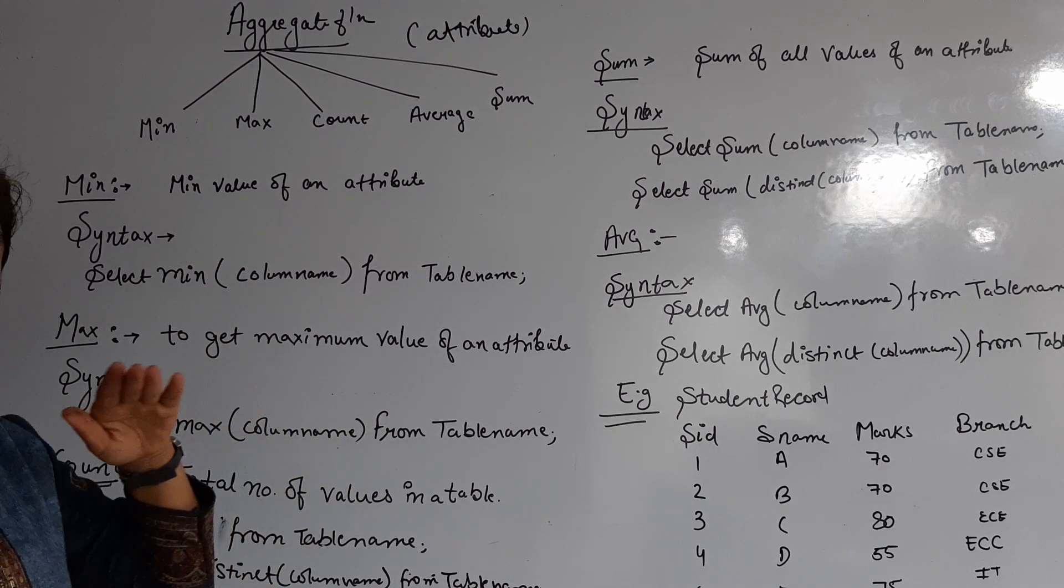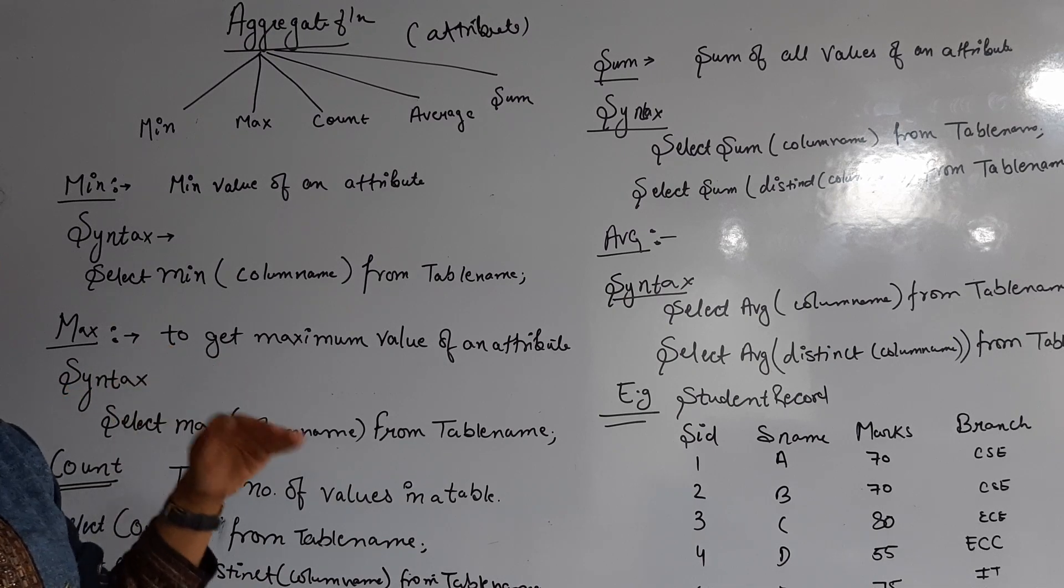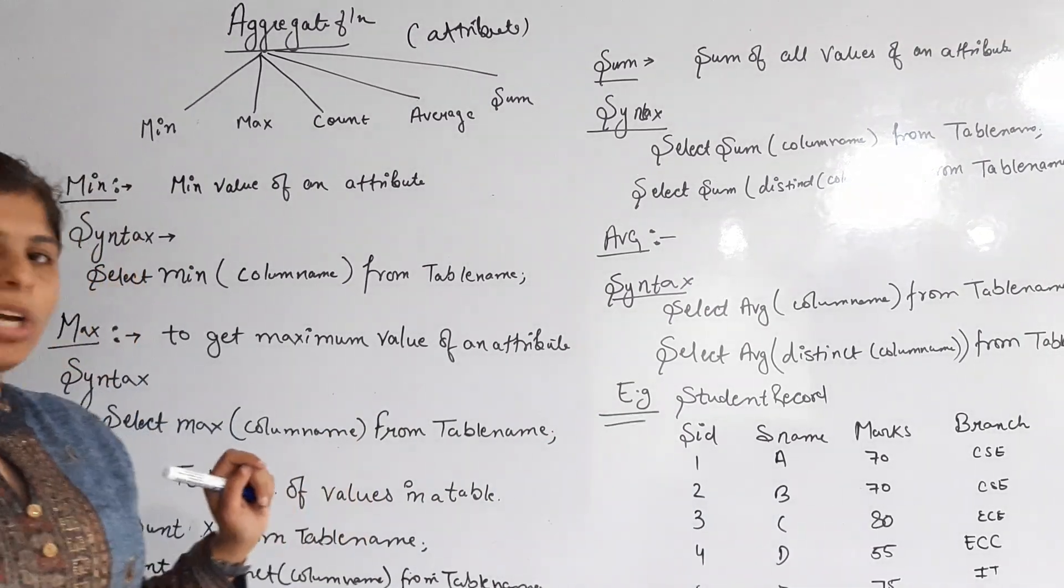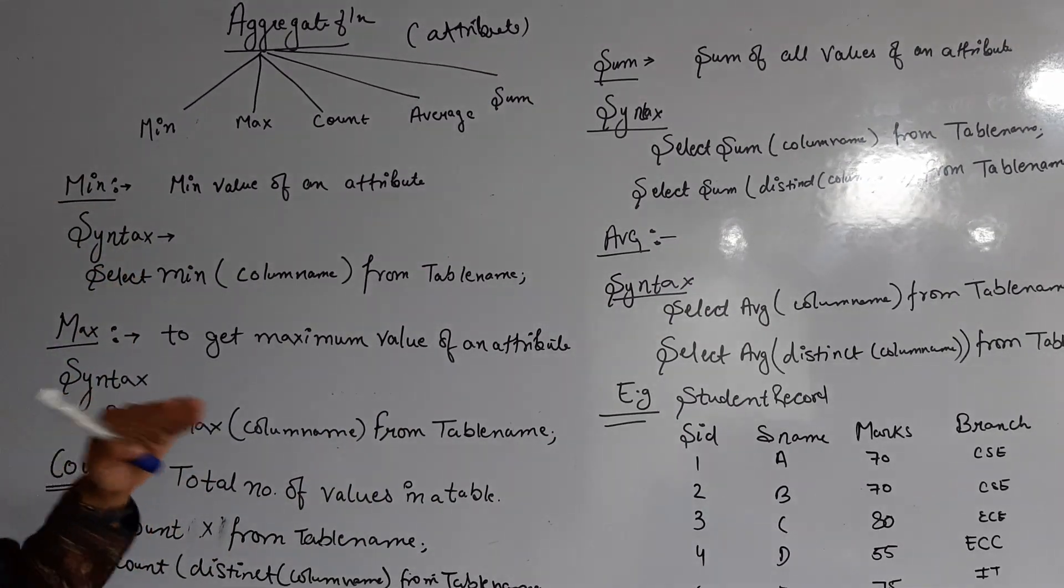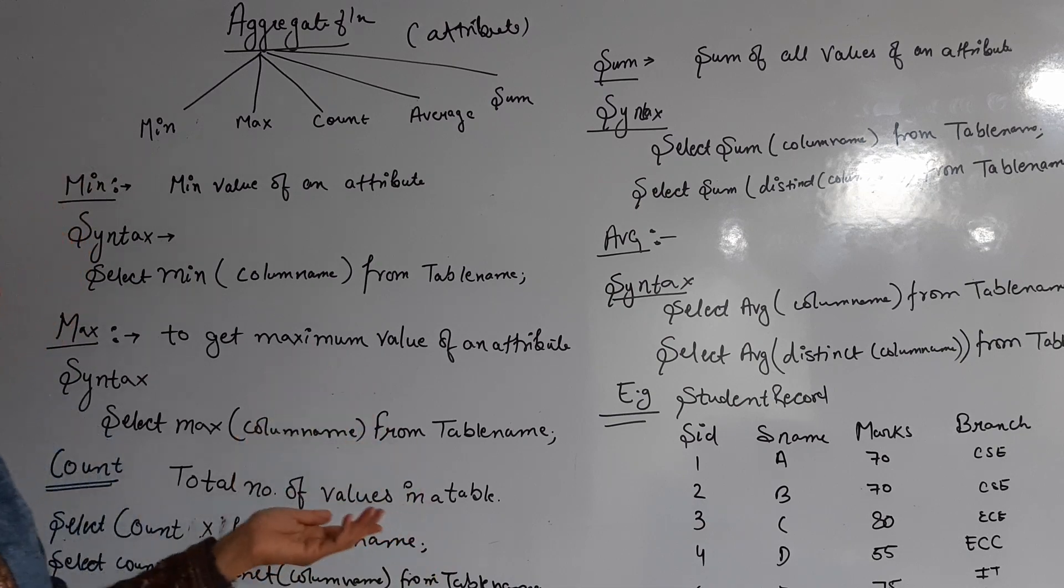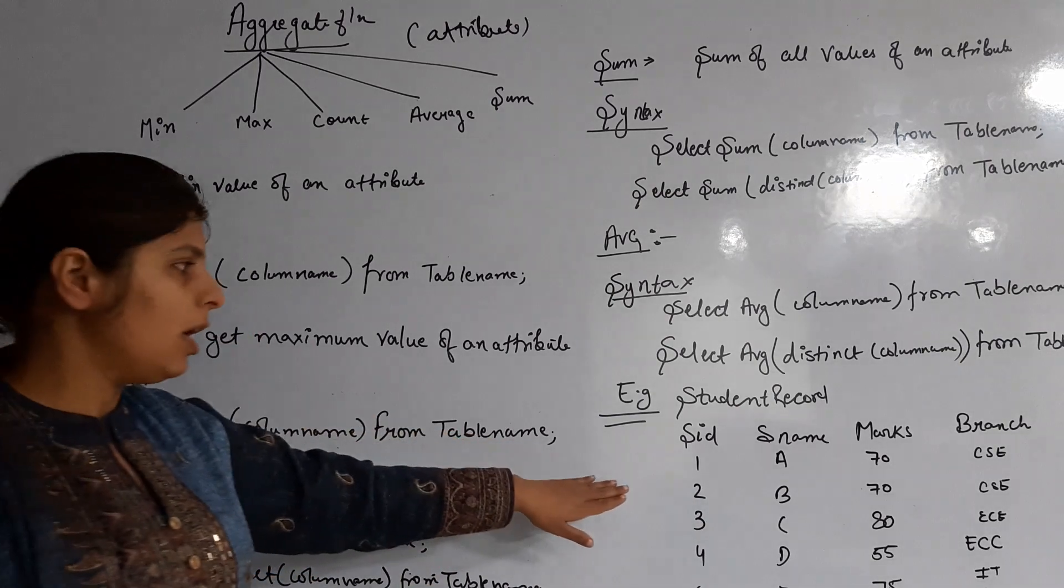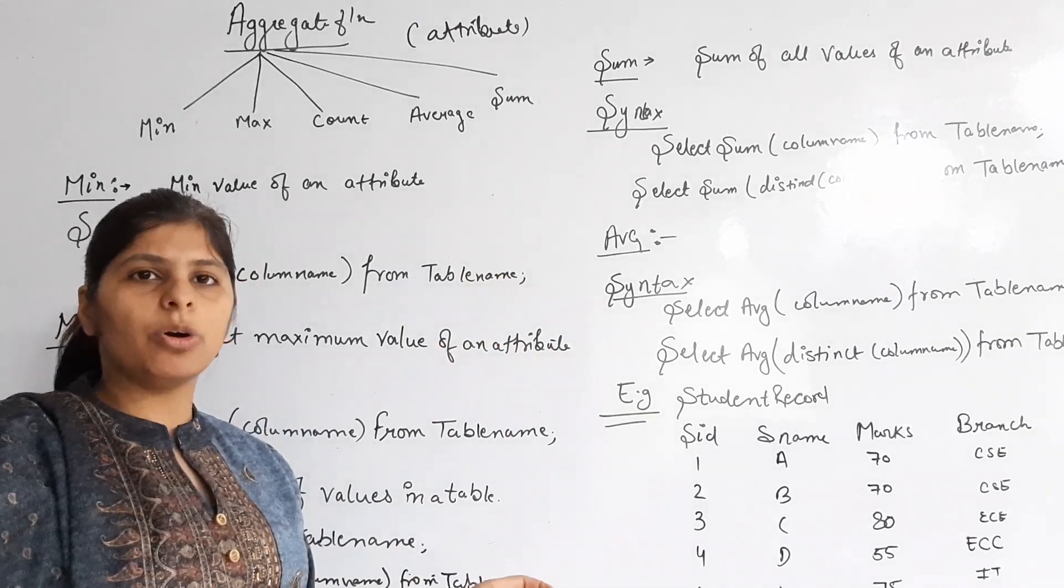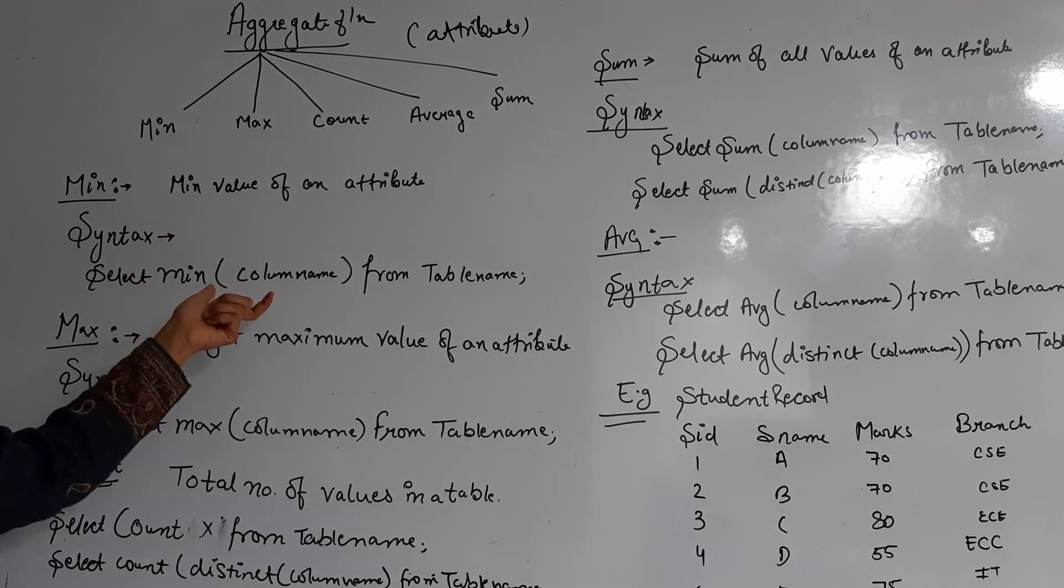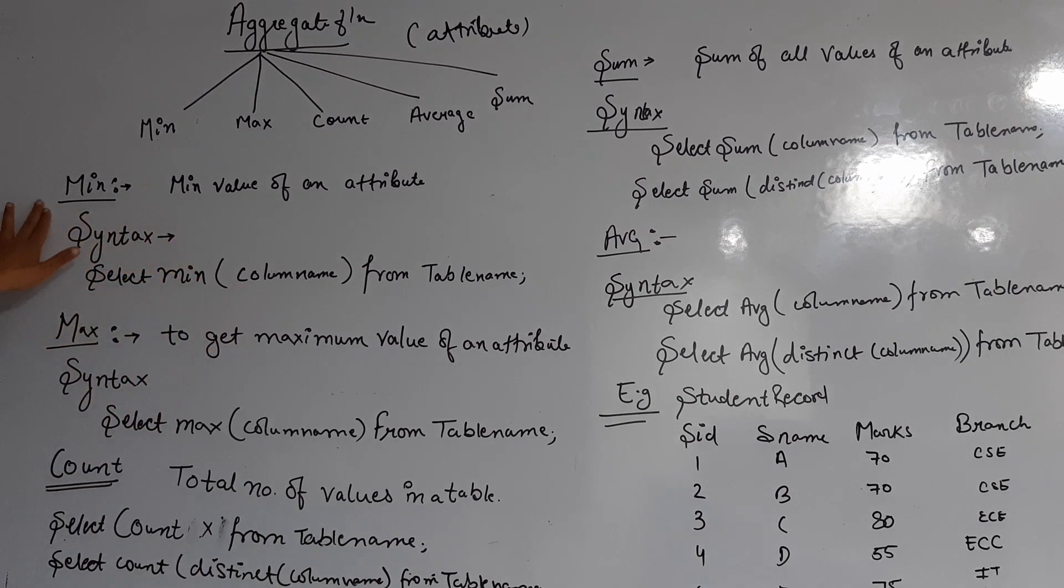If I need to find a complete record for a particular roll number - like roll number one, what is the name, how many marks, which branch - then we have to use WHERE conditions along with GROUP BY and HAVING conditions to get a particular record. But if I need a particular column, then we have to use the aggregate function.